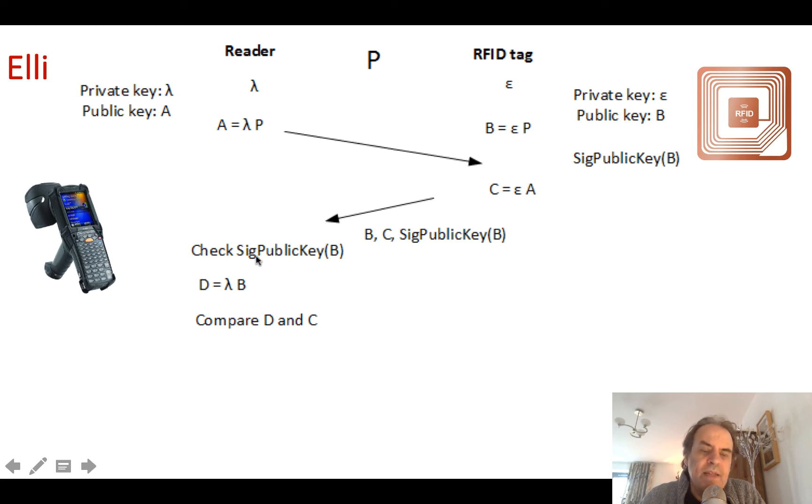It comes back, then checks the signature of B to see if it's been signed correctly, and then calculates B times lambda. Remember, B was epsilon P to give value of D. It then compares the value of D and C together, and if they're the same, then we've verified the tag. The device can continually challenge for this with a new value of lambda.